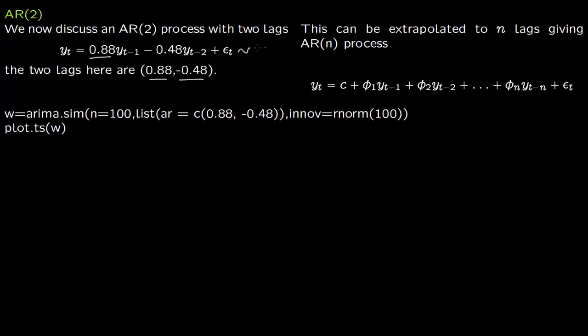This is normally distributed with mean 0 and variance 1 for our case, but in general this is normally distributed with mean 0 and variance sigma squared. You can extend this to n lags: y_t = c + φ_1*y_{t-1} + φ_2*y_{t-2} all the way to n lags.